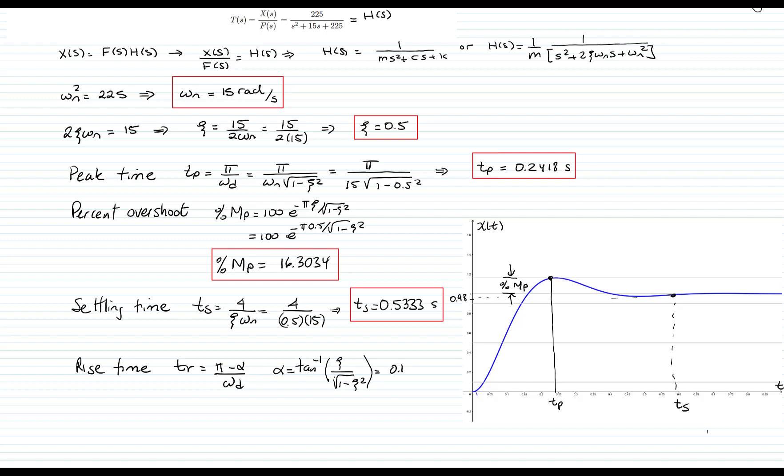And the rise time gives me a value of pi minus 0.153399, which is alpha, divided by the damped frequency, which is 15 times square root of 1 minus zeta squared. And that gives me a value of 0.2015 seconds.